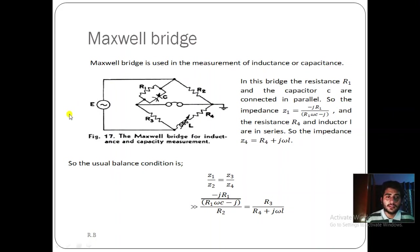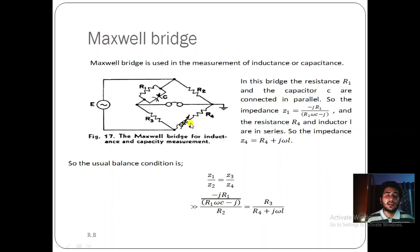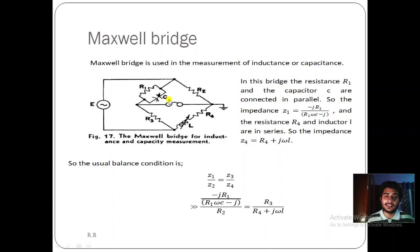In the Maxwell bridge figure, in the first arm there is a reactive and capacitive branch where resistance R1 and capacitance C are connected in parallel — the arrow sign indicates this capacitance is variable. Impedance Z2 equals R2 only — resistance only. In place of Z3 there is R3, and in place of Z4, a variable inductance L and resistance R4 are connected in series. This is the Maxwell bridge for inductance and capacitance measurement.